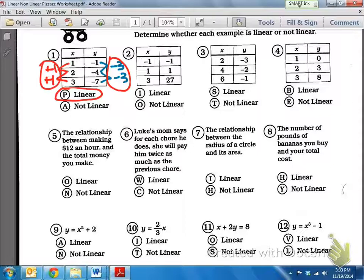Now, let's go to number 2 here. So, from negative 1 to positive 1, it's plus 2. From 1 to 27, it's plus 26. Whoa, that looks weird.